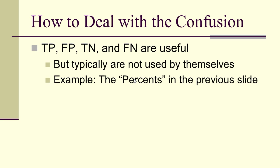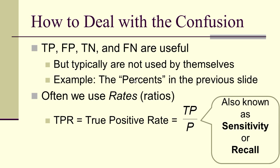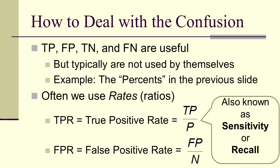How are we going to actually use this confusion matrix? The true positive, false positive, true negative, and false negative values are useful, but usually not by themselves. In general, we tend to use ratios. The true positive rate is the number of true positives divided by the number of actual positives (capital P). This is also known as the sensitivity or the recall of the classifier. The false positive rate is the number of false positives divided by the number of actual negatives (capital N).